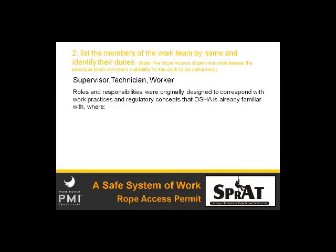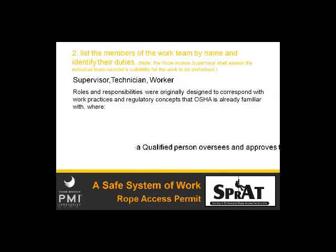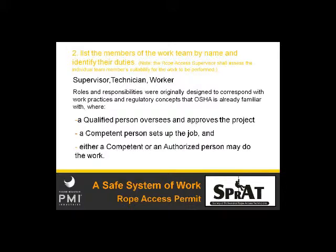We also want to list the members of the work team by name, identifying each of their specific duties, which helps them understand their expectations and makes sure we as supervisors understand their training level and whether they're capable of exactly what we've assigned them to do. The roles and responsibilities of supervisor, technician, and worker were originally designed to correspond with work practices that OSHA is already familiar with: the authorized person is the person who has authorization to do work, the supervisor oversees work, the attendant observes to make sure work is being done safely, and management is done by a qualified person — all aligning with the qualified, competent, and authorized mindset within OSHA.